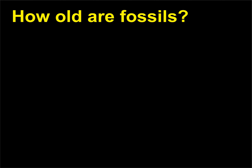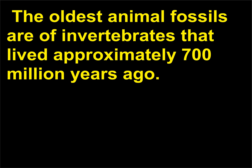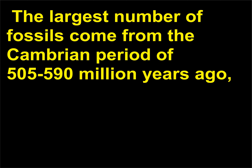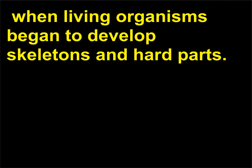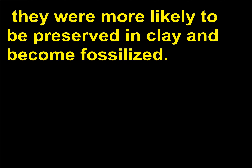How old are fossils? The oldest known fossils are of bacteria that left their impressions approximately 3.5 billion years ago. The oldest animal fossils are of invertebrates that lived approximately 700 million years ago. The largest number of fossils come from the Cambrian period, 505 to 590 million years ago, when living organisms began to develop skeletons and hard parts. Since these parts tended to last longer than ordinary tissue, they were more likely to be preserved in clay and become fossilized.